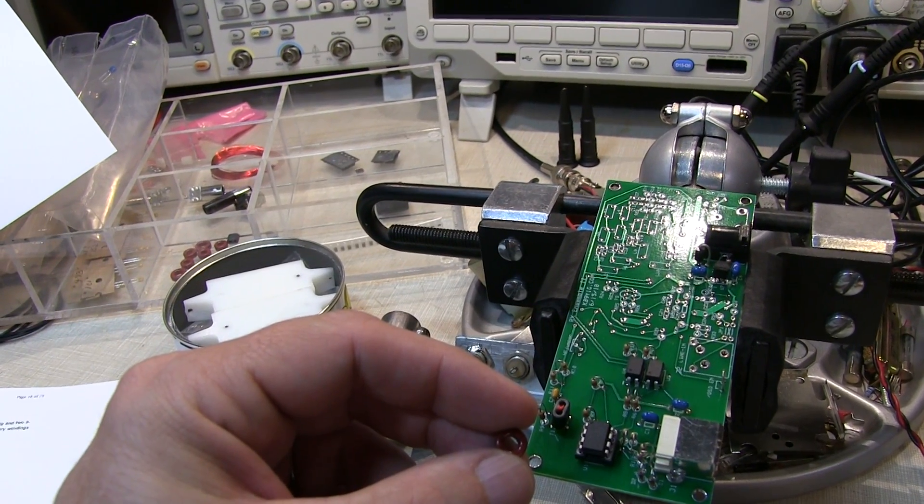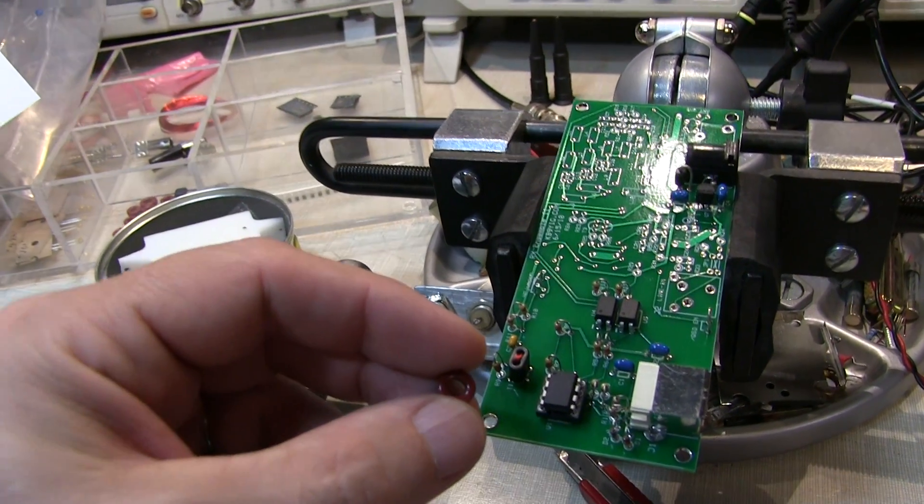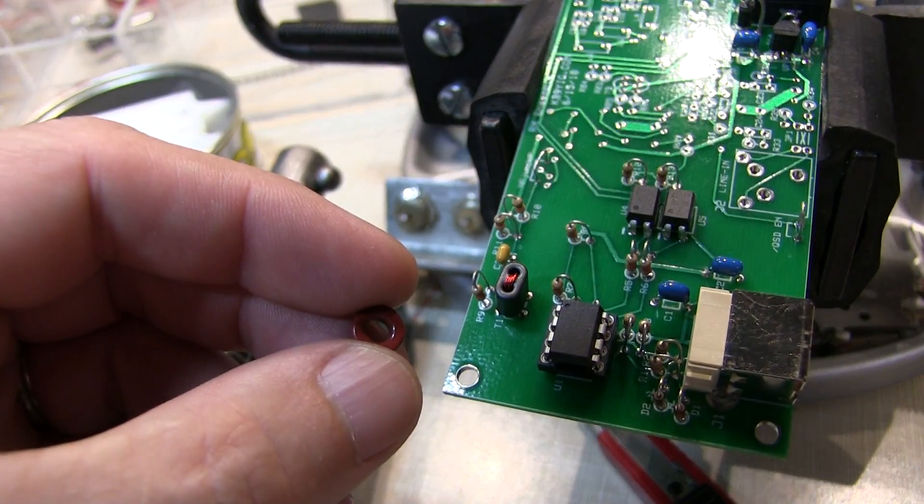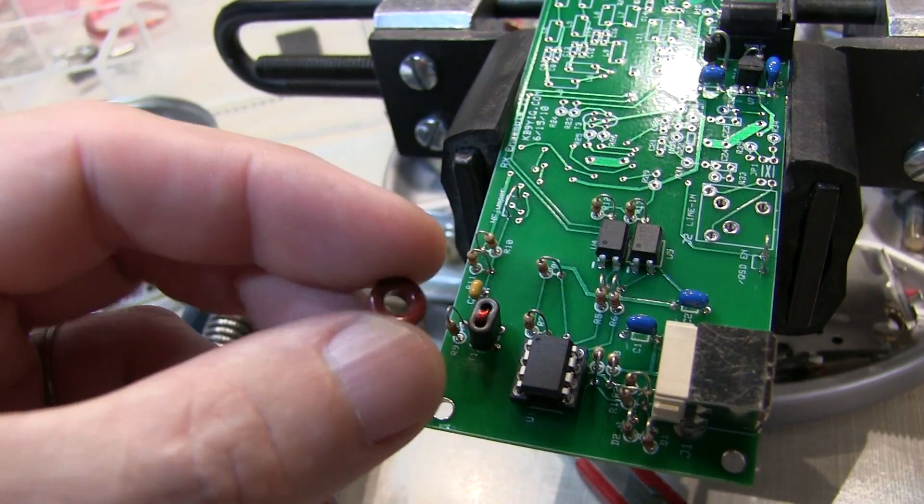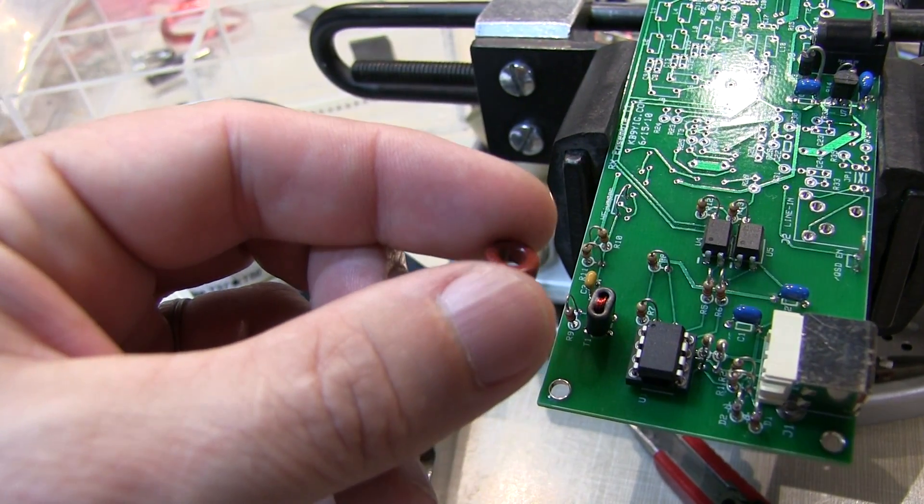The current kit that I'm assembling involves the winding of several transformers on binocular cores like this one installed on the board, and also winding several toroidal inductors.